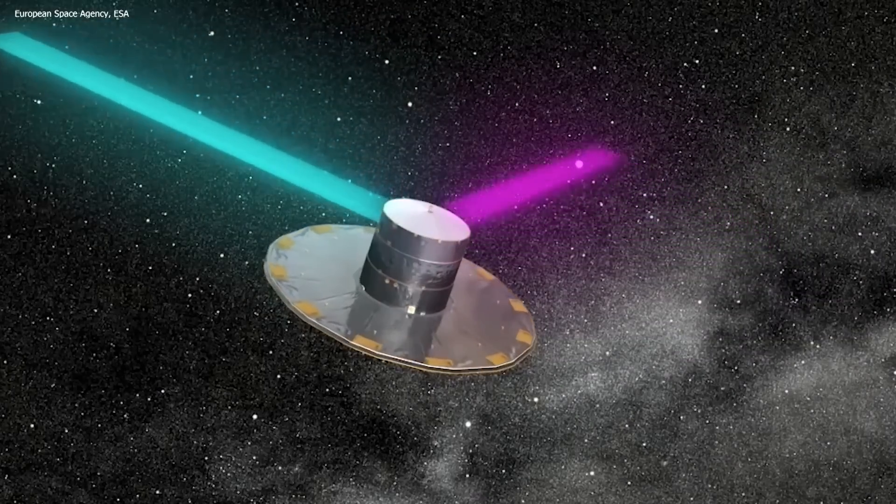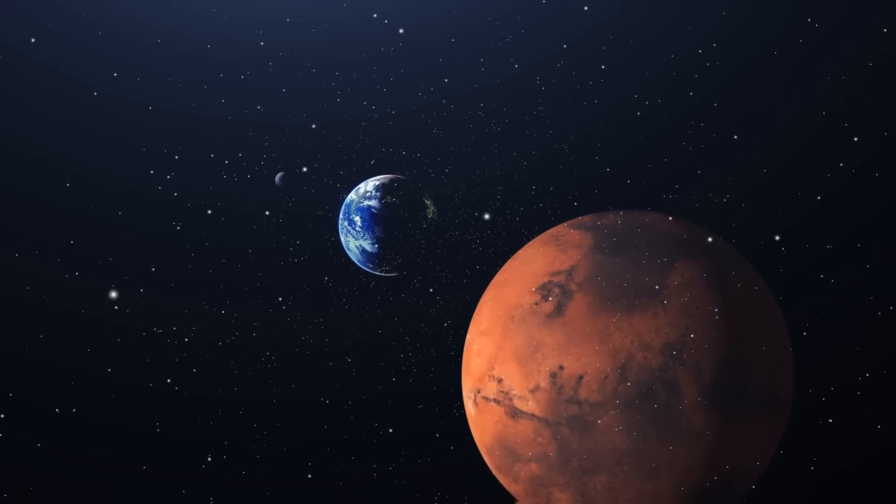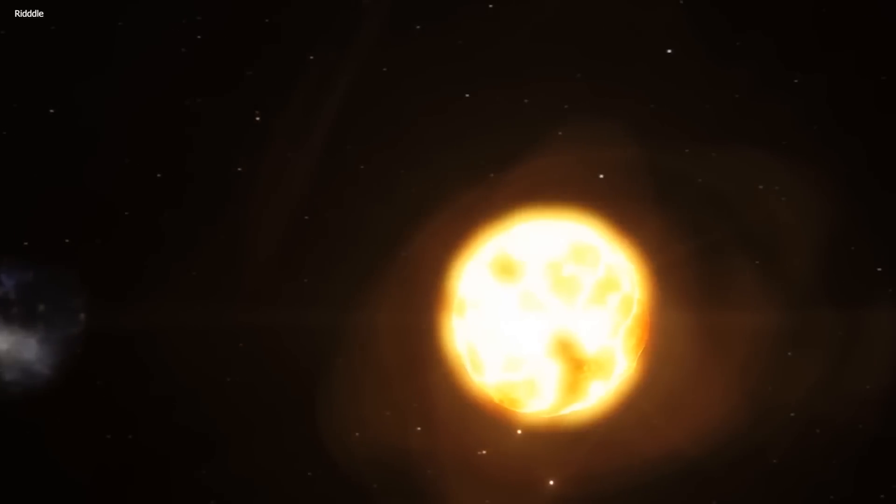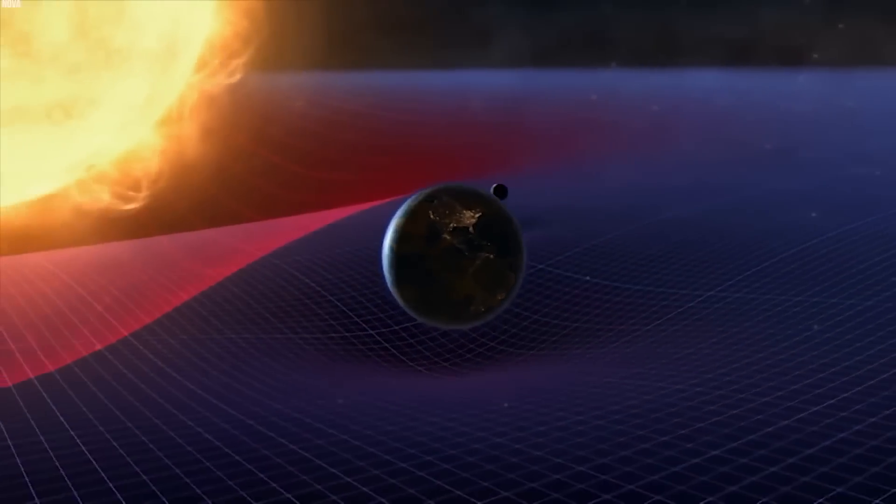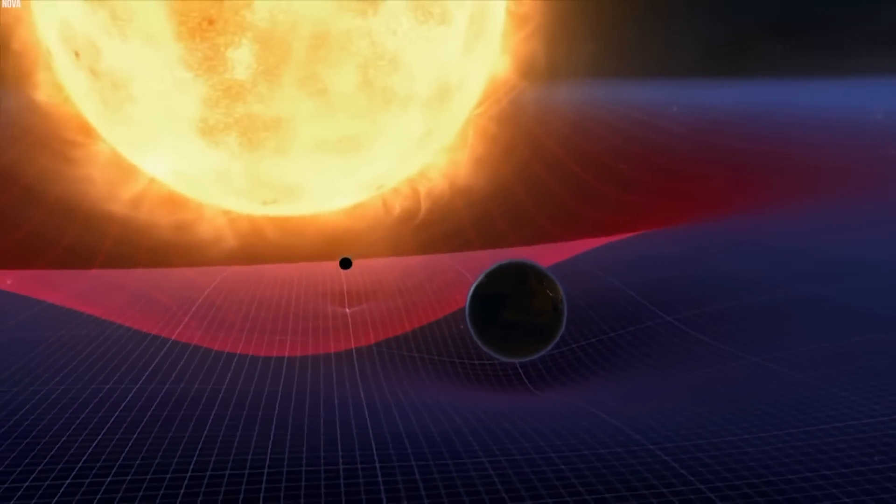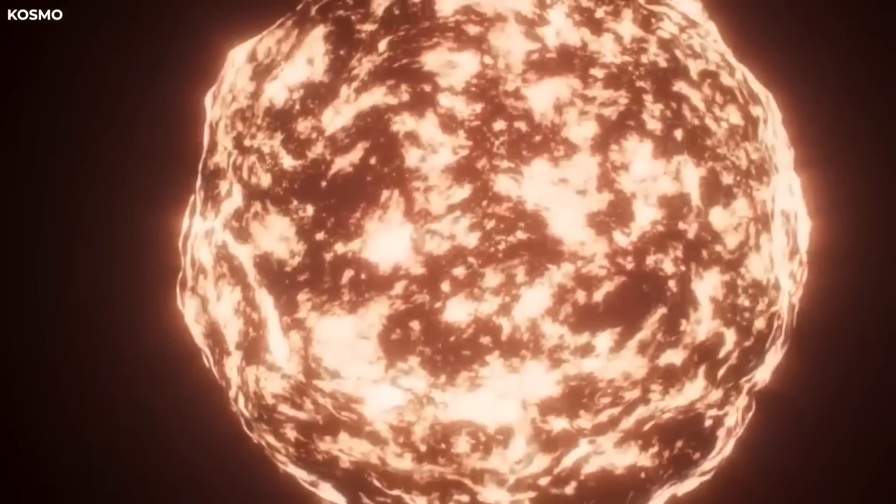It is interesting to note that Betelgeuse is significantly younger than the sun, being roughly 10 million years old compared to the sun's 4.6 billion years. The possibility of Betelgeuse exploding as a supernova raises concerns about its potential impact on Earth.